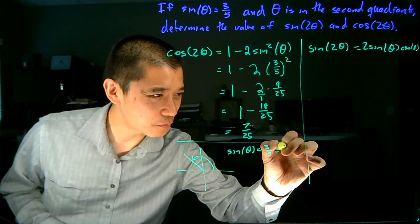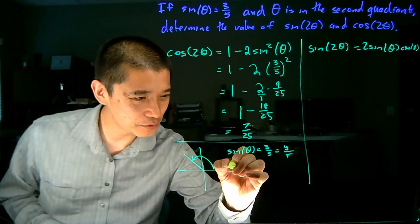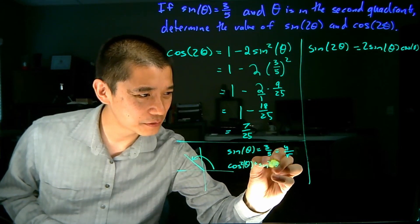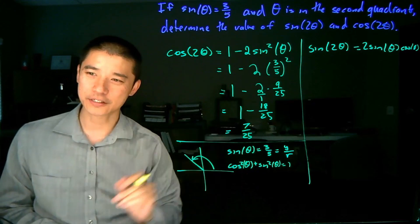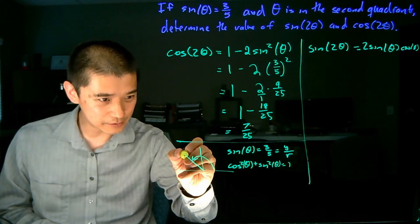So for the geometric technique, we want to think of this as y over r. For the algebraic technique, we use cosine squared theta plus sine squared theta equals 1, the Pythagorean identity, make a substitution, and go from there. In this case, I'm going to go ahead and use the geometric approach.